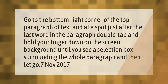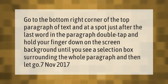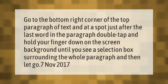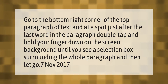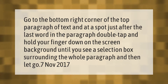Go to the bottom right corner of the top paragraph of text, at a spot just after the last word in the paragraph. Double tap and hold your finger down on the screen background until you see a selection box surrounding the whole paragraph, and then let go.